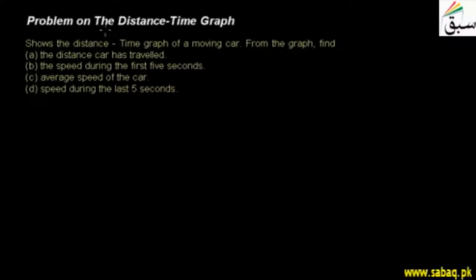Students will solve a problem with a distance-time graph. We have a statement showing the distance-time graph of a moving car. From the graph, find: the distance the car has travelled, the speed during the first 5 seconds, the average speed of the car, and the speed during the last 5 seconds.